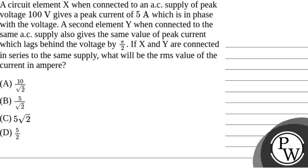Let's set the question. The question says that a circuit element X, when connected to an AC supply of peak voltage 100 volt, gives a peak current of 5 ampere which is in phase with the voltage. A second element Y, when connected to the same AC supply, gives the same value of peak current which lags behind the voltage by pi by 2. If X and Y are connected in series to the same supply, what will be the RMS value of the current?